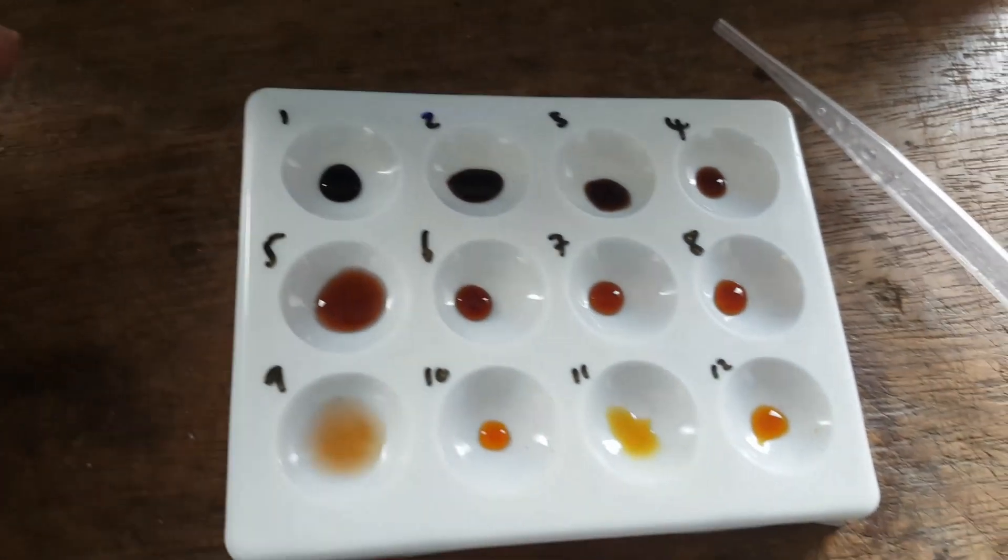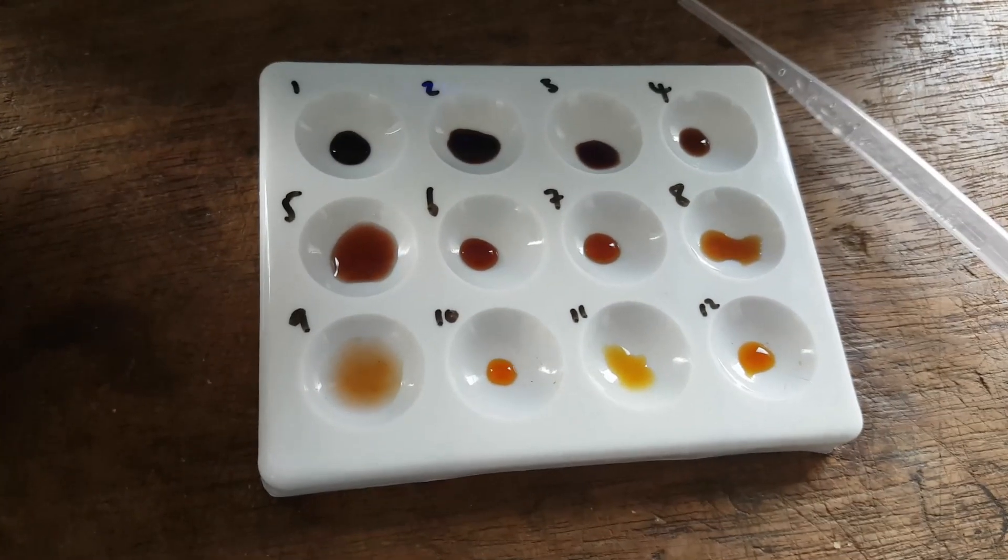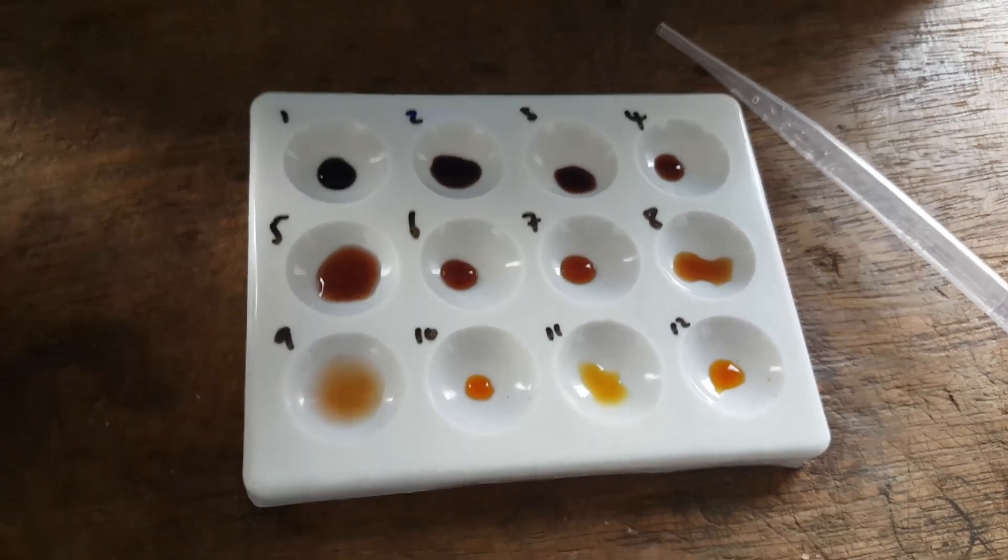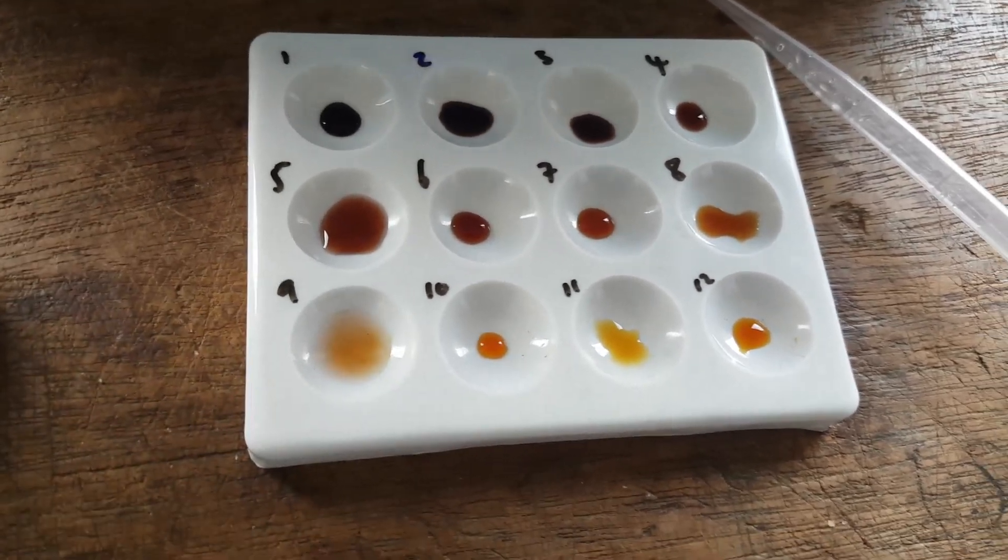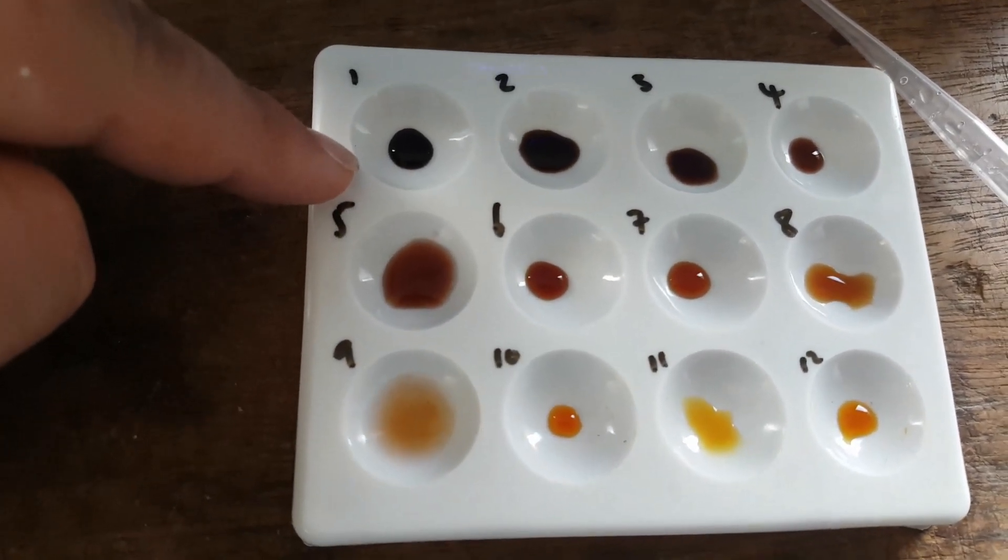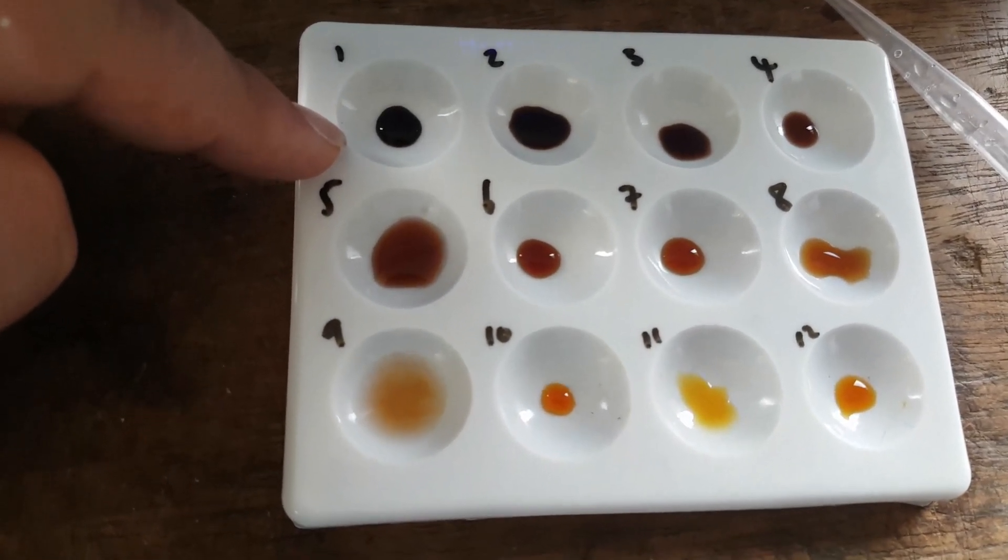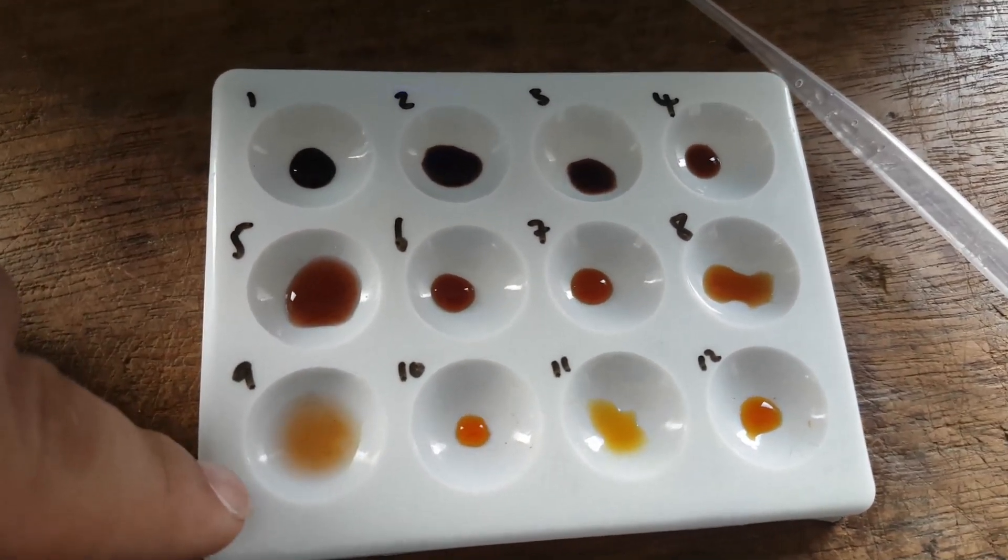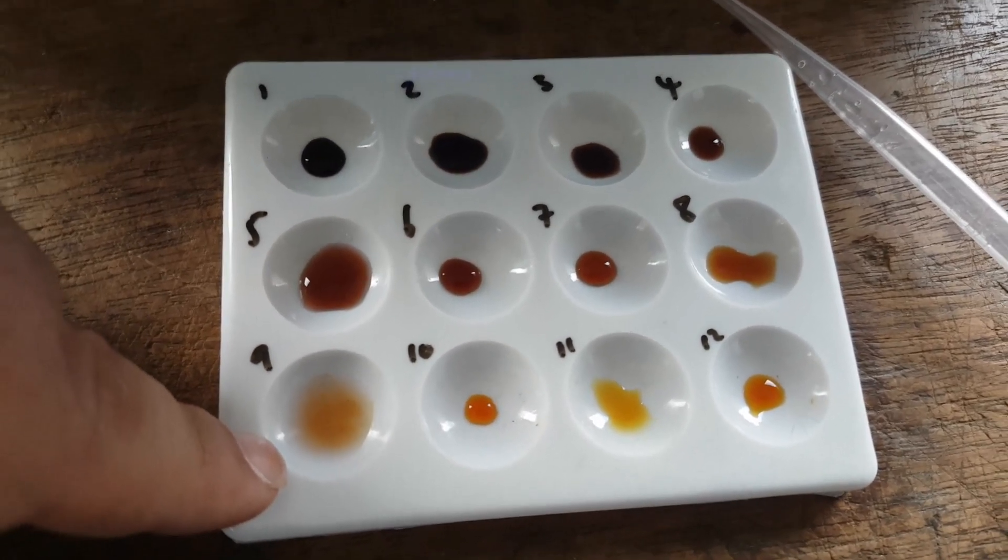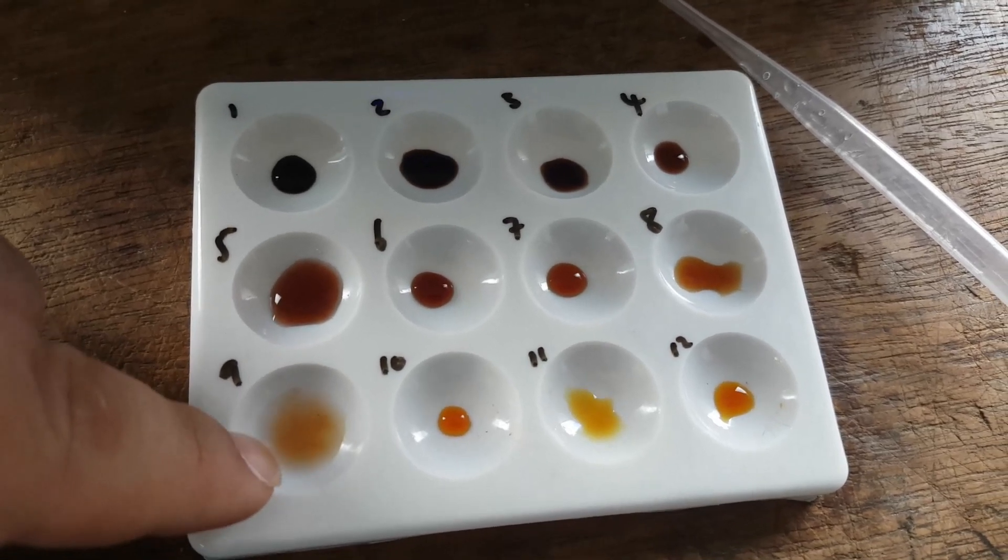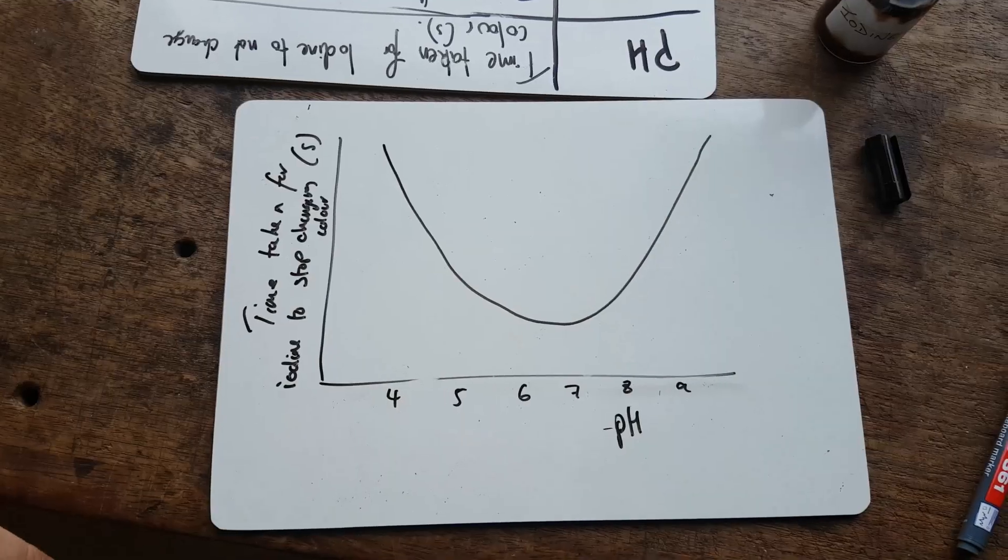Now, to explain why this has happened, right, what we need to see is, well, basically, the enzyme amylase has broken down the starch into sugars. Now, iodine tests for starch and it does not test for sugars. So here, the amylase had really not broken down much starch. So we've got loads of starch here. By the time we get to here, the amylase had broken down loads and loads of starch. And therefore, we get a negative test for starch. In other words, it's all sugars here and no starch.